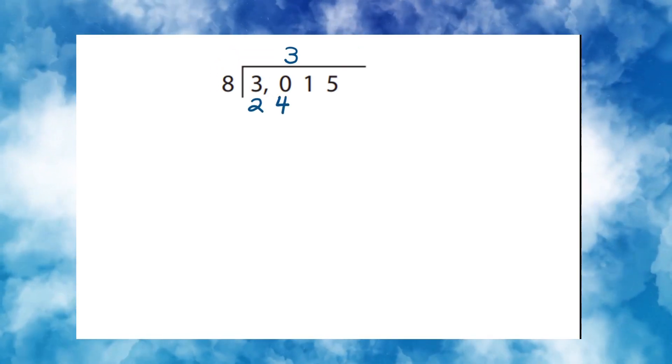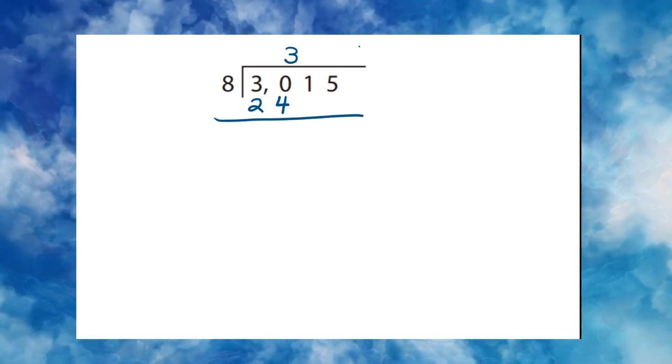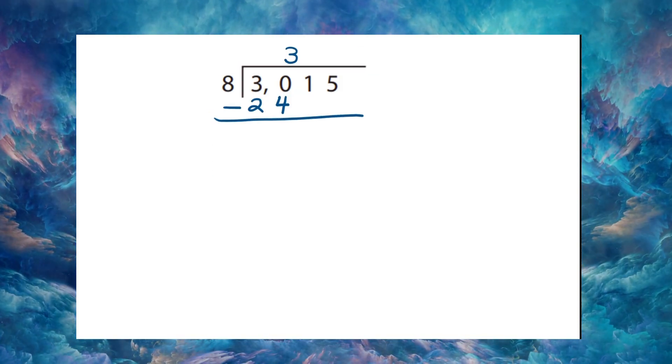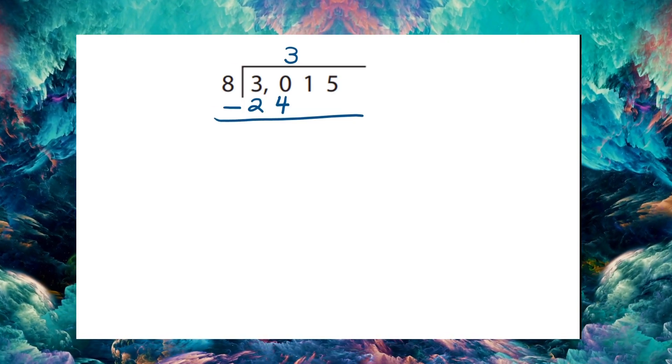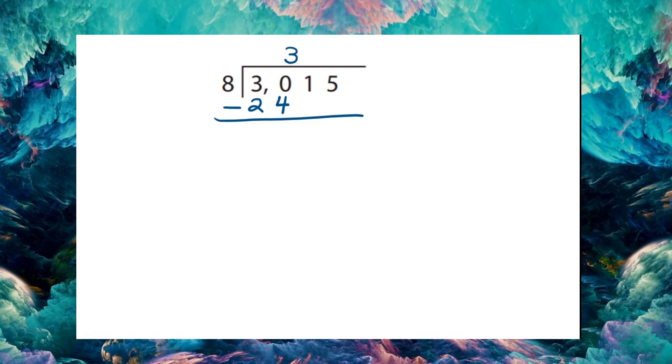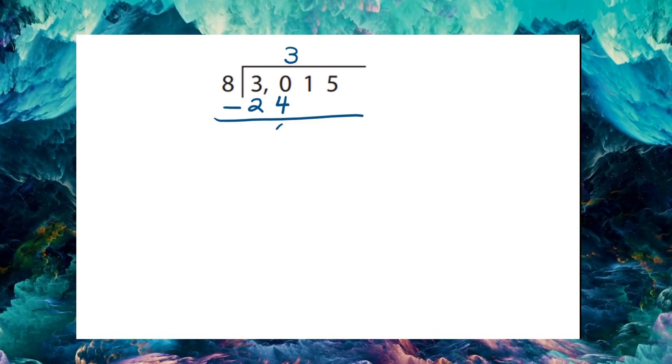For three times eight is twenty-four. And now that we have lined twenty-four below thirty, we can simply subtract it from thirty, not to reduce it, but simply to subtract it, leaving a difference of six.